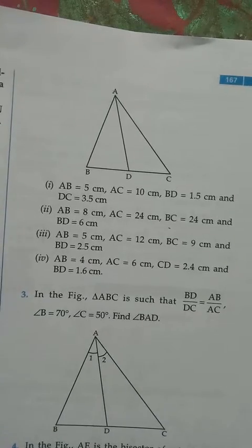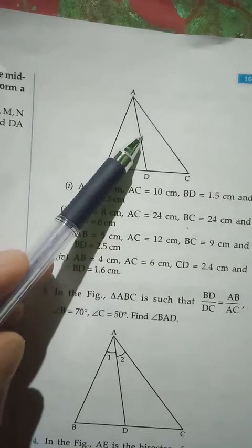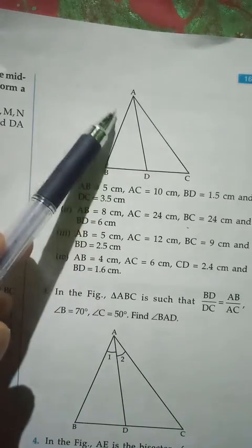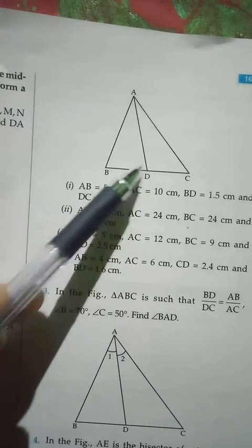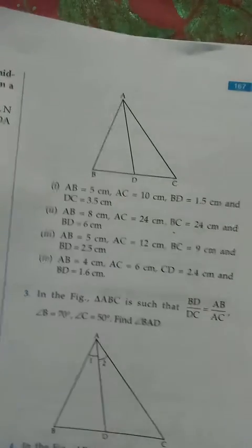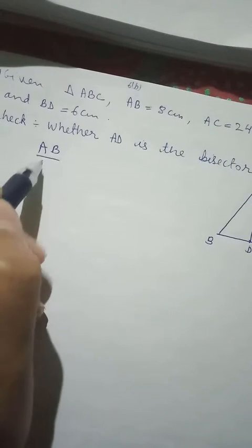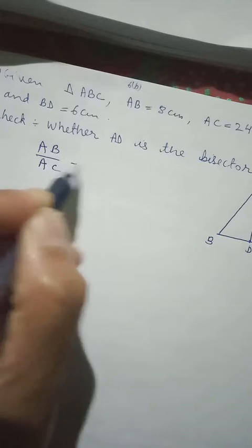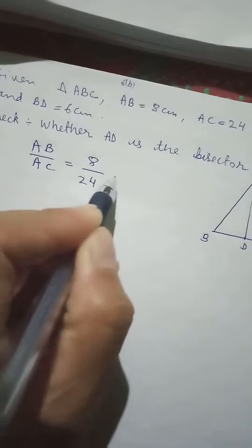Since they want to prove it is an angle bisector, we'll try to take the ratio of the side which contains the angle as well as the ratio of the side where the bisector meets. So based on that, we can take AB by AC.